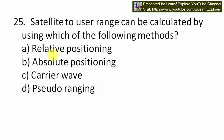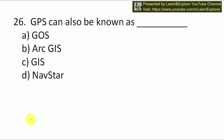Next question: satellite-to-user range can be calculated by using which of the following methods — relative position, absolute position, or pseudoranging? Our answer will be D — pseudoranging, because pseudoranging is the method of measuring distance between the satellite and the receiver antenna.